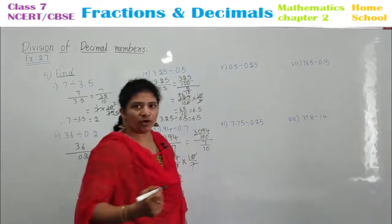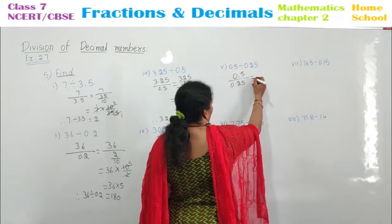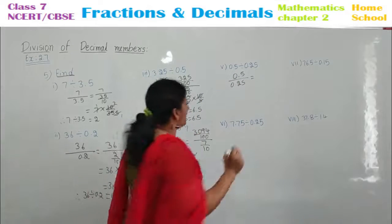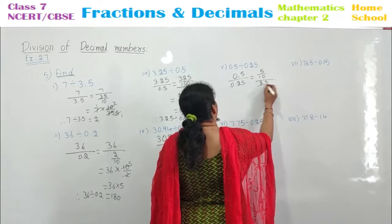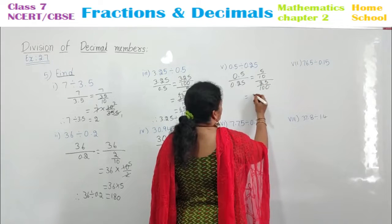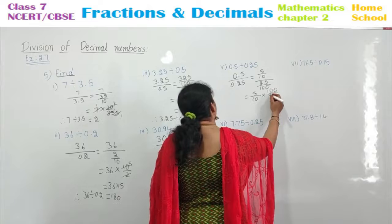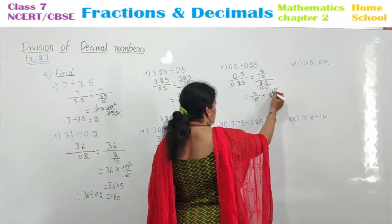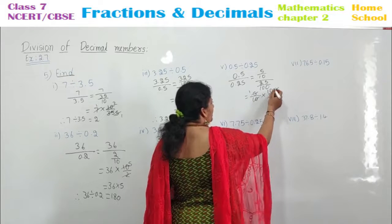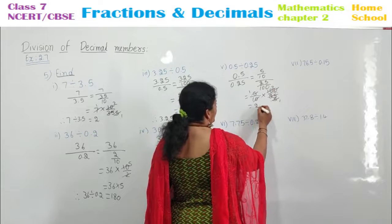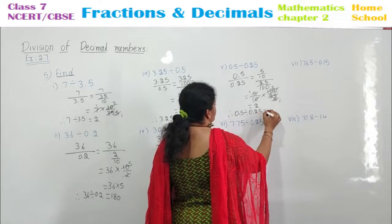Fifth one: 0.5 divided by 0.25. Write as fractions: 5 by 10 whole divided by 25 by 100. Bring the denominator to the numerator — do the reciprocal and multiply: 100 by 25. The zeros cancel. 5 fives are 25, and 5 twos are 10. Therefore, your answer is 2. So, 0.5 divided by 0.25 is equal to 2.